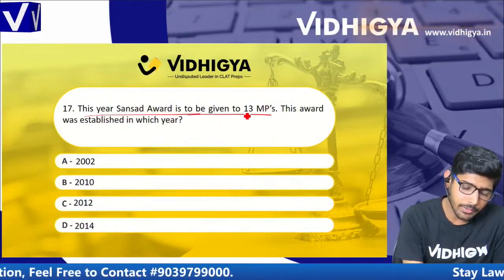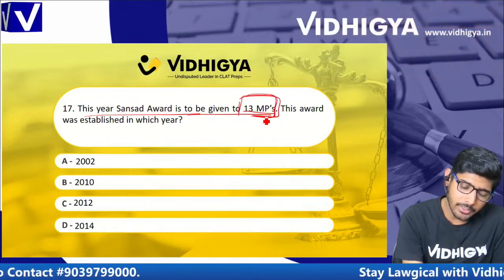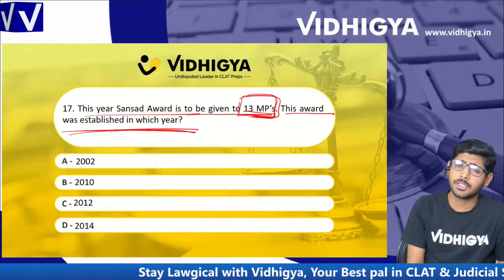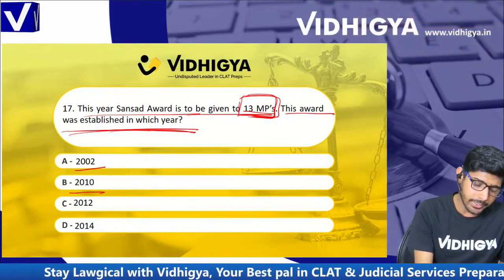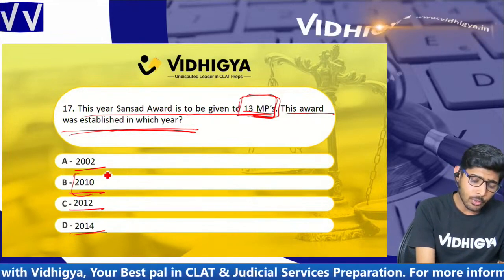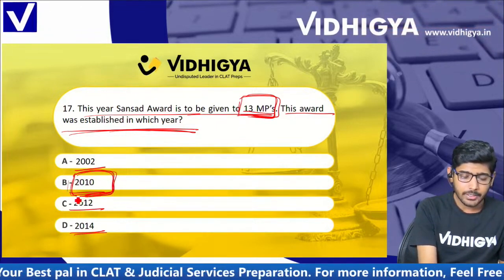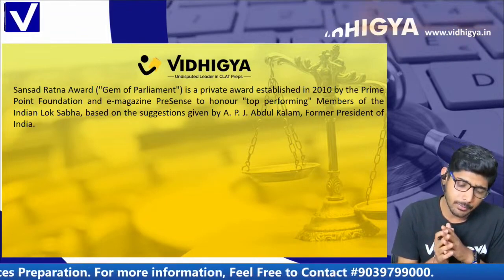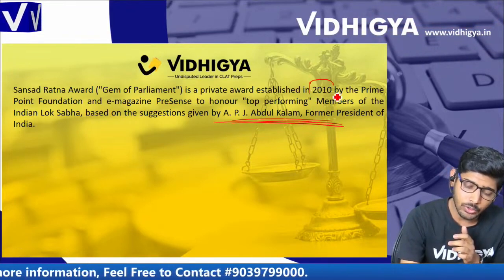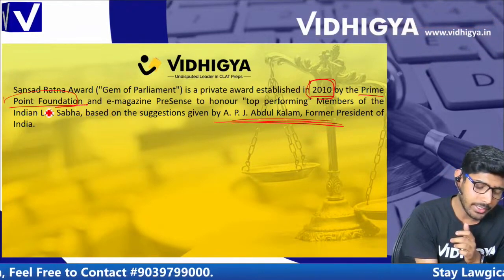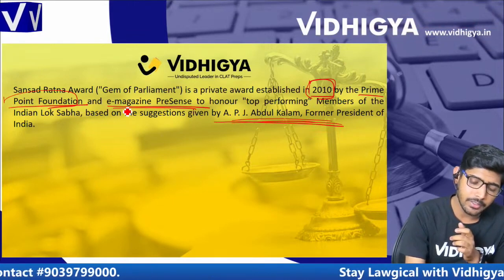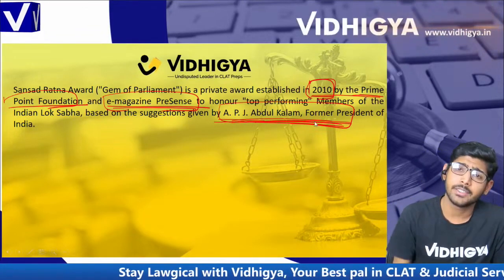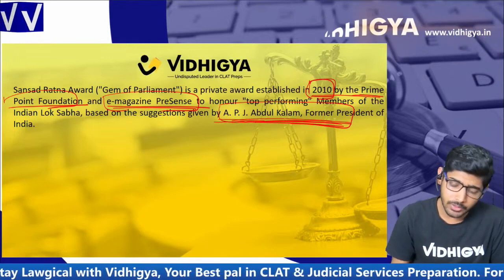This year, the Sansad Award is to be given to 13 MPs. In which year was this award established? Options are: 2002, 2010, 2012, and 2014. The correct answer is 2010 — the Sansad Award was established in 2010. The idea was from former President APJ Abdul Kalam, and it was started by Prime Point Foundation and E-Magazine Presents. Remember: idea was APJ Abdul Kalam's, started in 2010.